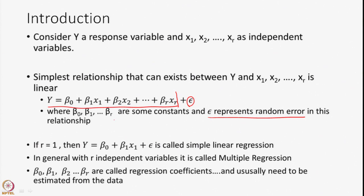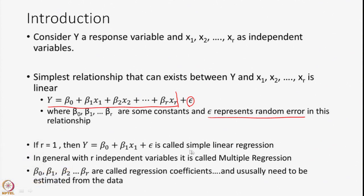If r is equal to 1, this relationship is called simple linear regression: y = β₀ + β₁x₁ + ε. In general, with r independent variables it is called multiple regression. The coefficients β₀, β₁, ..., βᵣ are called regression coefficients and they are generally unknown — they need to be estimated from the data.